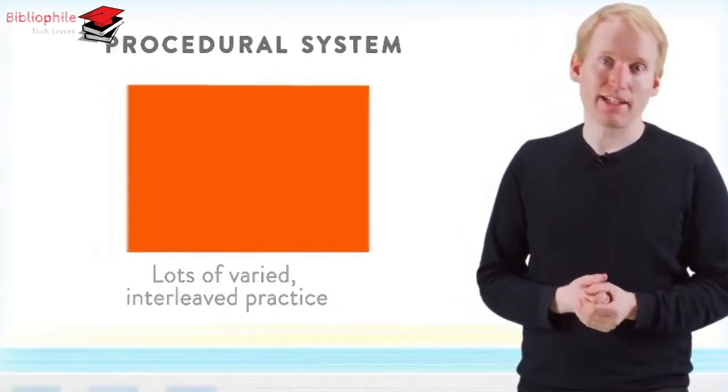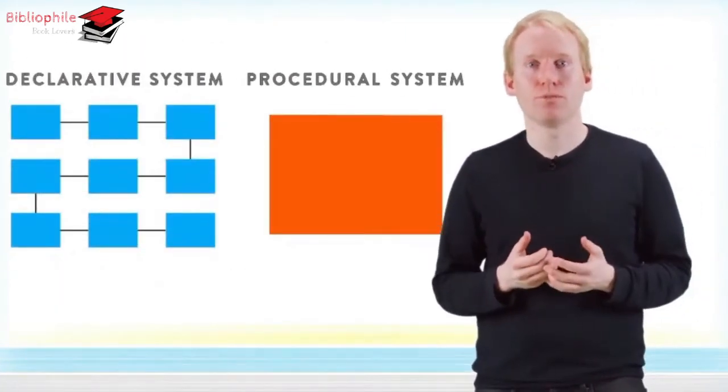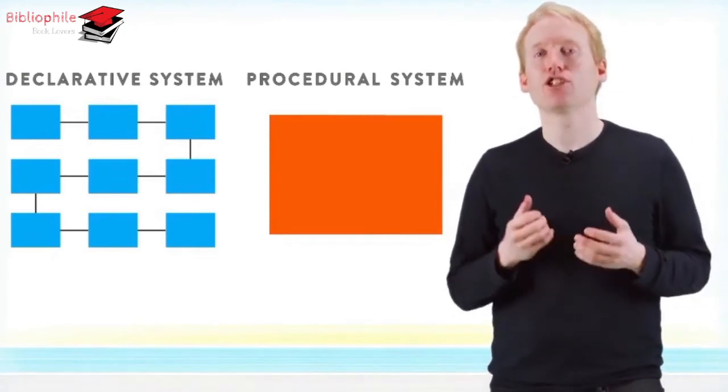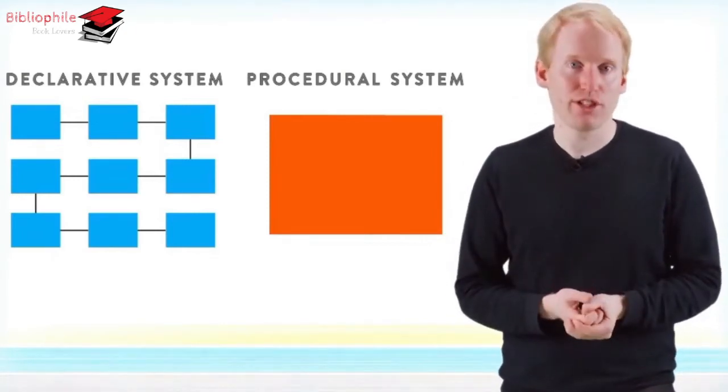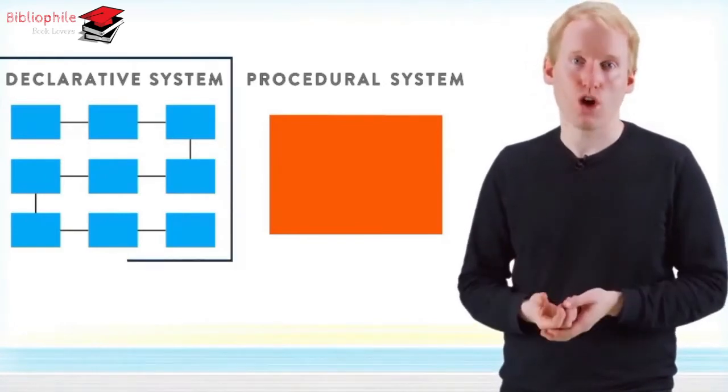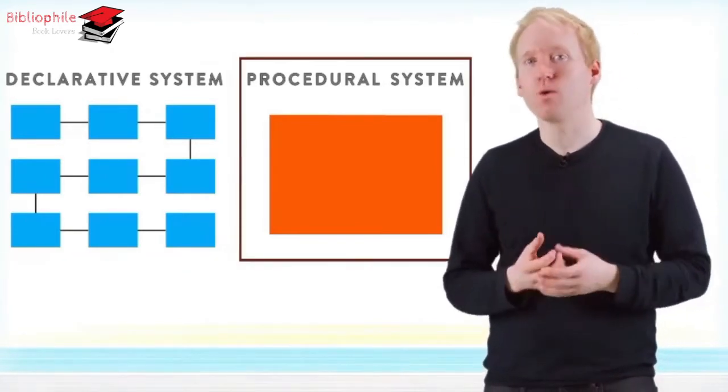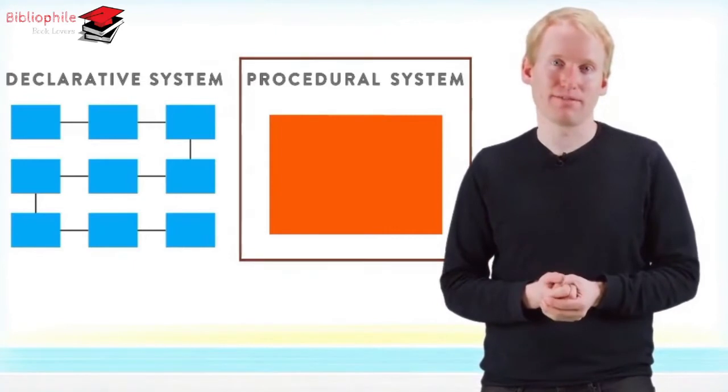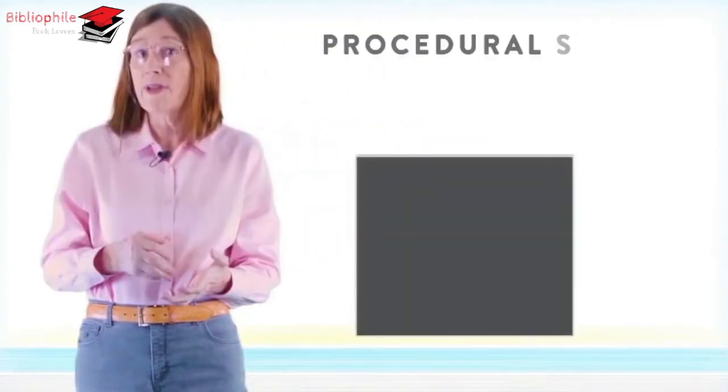Notice that the declarative and the procedural systems can learn the same information. They just allow you to use that information differently, either slowly and with sometimes difficult thoughts, or quickly, without even thinking about it. Let's talk some more about how you can create strong sets of links using your procedural system.